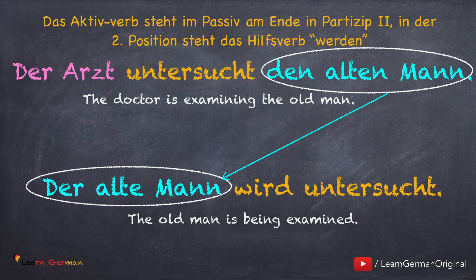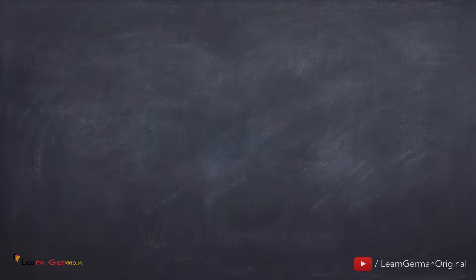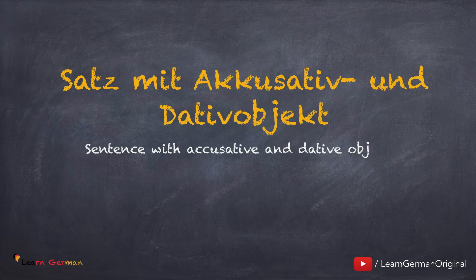This was the easiest case where we have verbs that take the accusative object. In the following sentences we have different cases where you also have dative objects, prepositional objects, adverbs, etc. In all cases the verb will be placed at the end in Partizip 2 and the helping verb werden will be conjugated and placed in the second position.